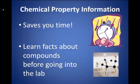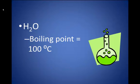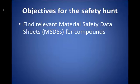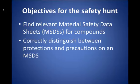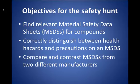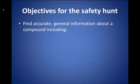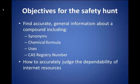Published chemical property information is considered factual. For example, the boiling point of water is a known fact — why not save time finding the value in the literature instead of waiting for a pot to boil? With the completion of this assignment, you will know how to find relevant material safety data sheets, correctly distinguish between personal protections and precautions on an MSDS, compare and contrast MSDSs from two different manufacturers, find accurate general information including synonyms, chemical formula, common uses, and the CAS registry number, and accurately judge the dependability of internet resources.